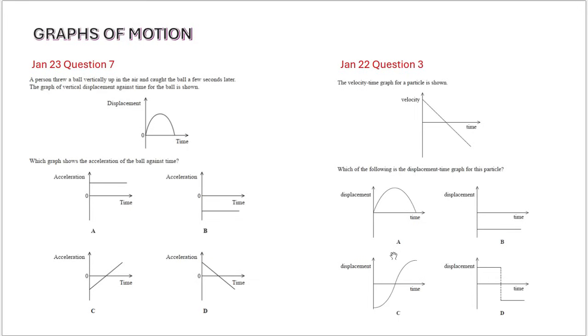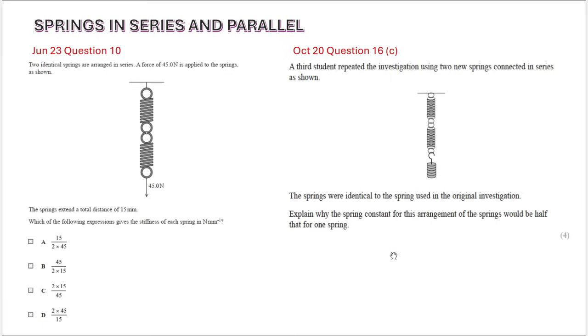Graphs of motion - you can just take a look at the graphs and see the similarities. Then you have springs in series and parallel. What you have to remember is what happens to the spring constant when they're connected in parallel and when they're connected in series. All of these are totally covered in the e-booklet.